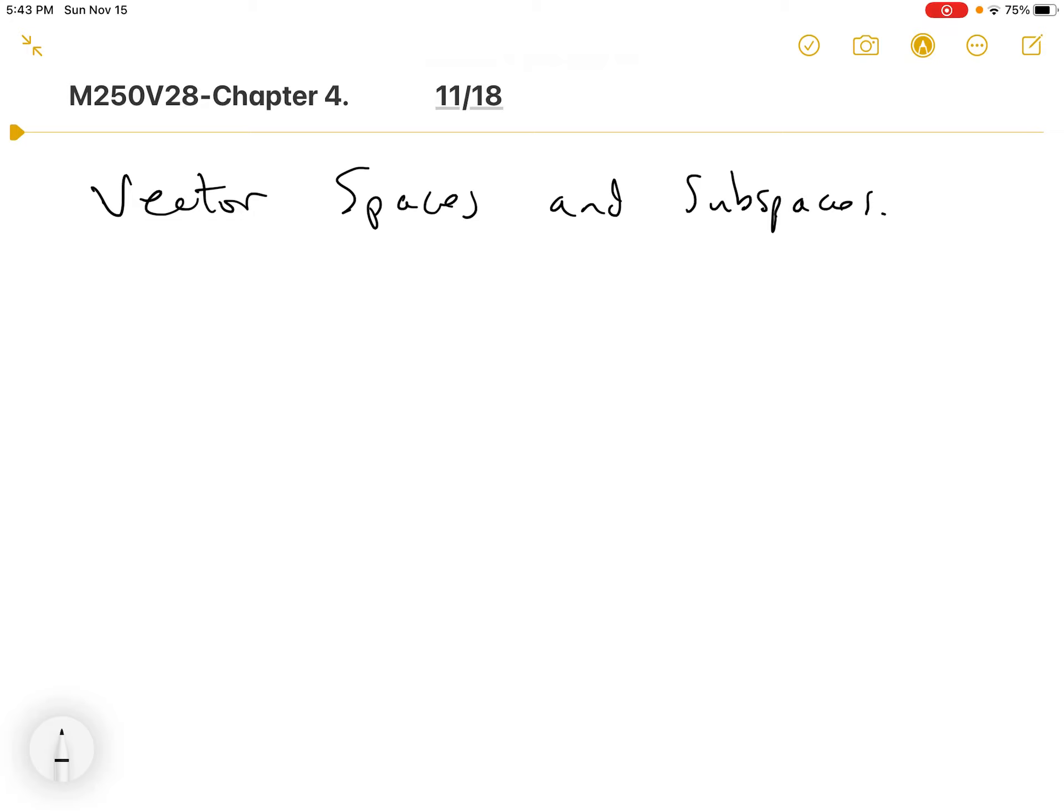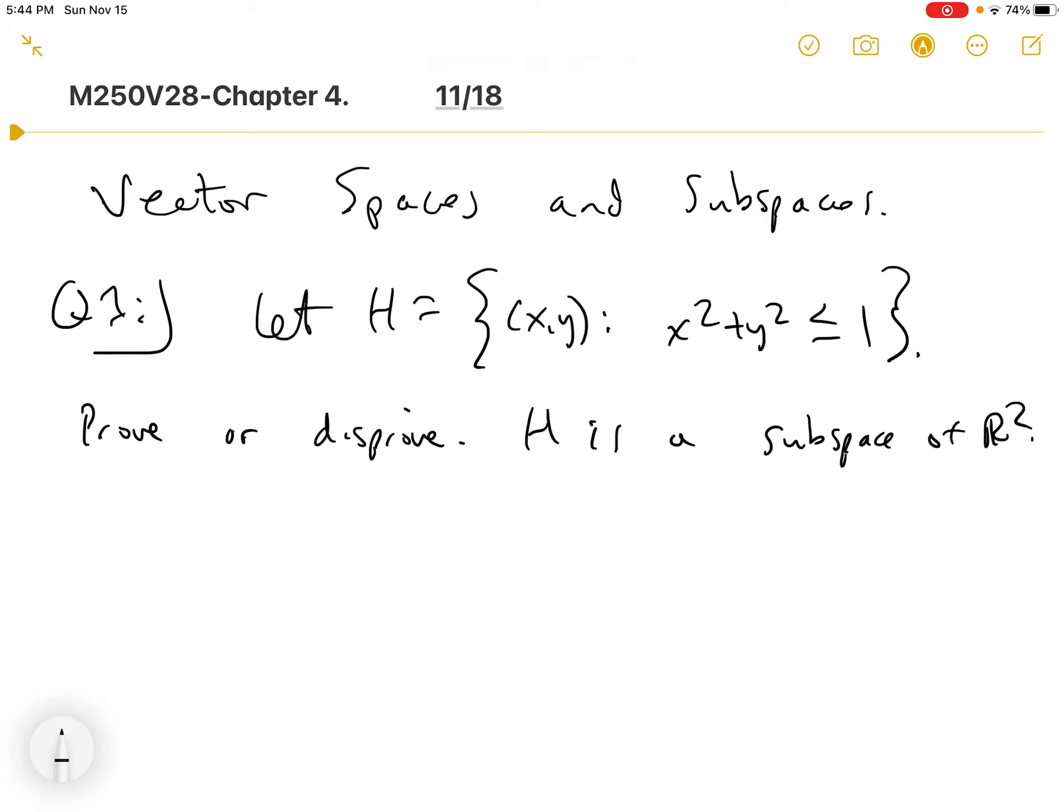Question one. We're going to let H be a set of ordered pairs (x, y) such that x squared plus y squared is less than or equal to 1. This is the closed unit circle. We're at all the points inside the unit circle, including the boundary. And the question is, prove or disprove: H is a subspace of R2. So decide if it is or it isn't, and go ahead and prove that.